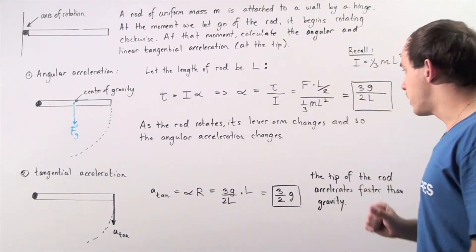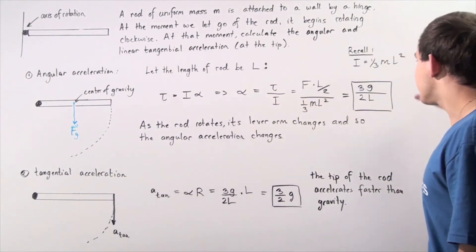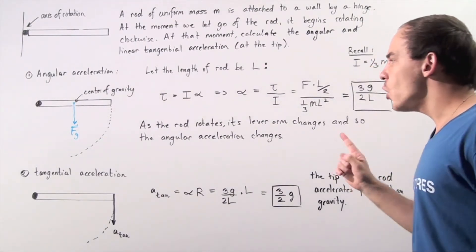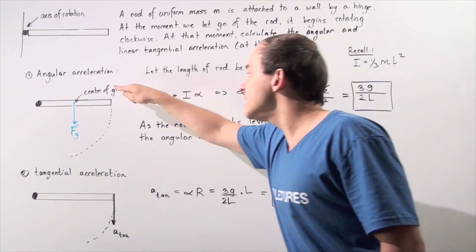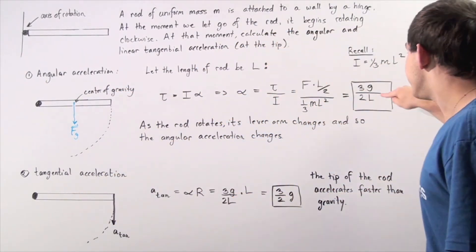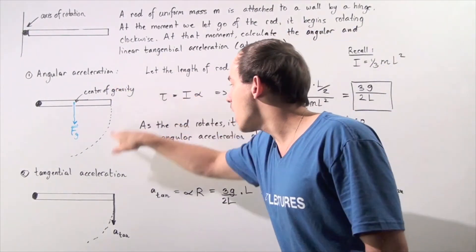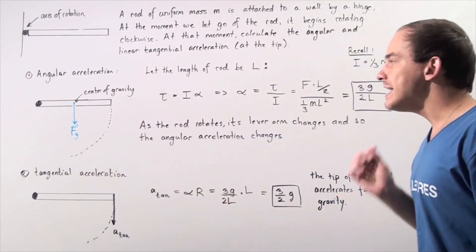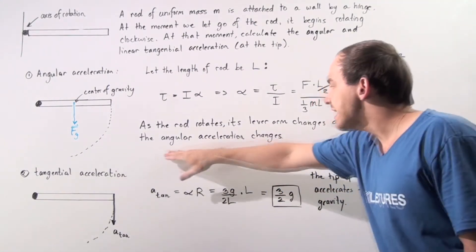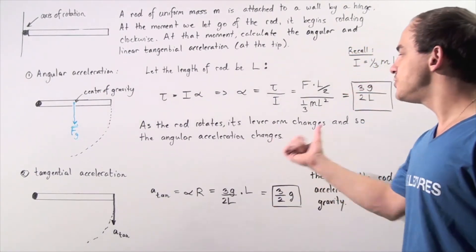We're left with our angular acceleration equal to 3 times G divided by 2L. Notice that as the rod begins to rotate, its lever arm — the quantity L — begins to change. That means as our object is rotating, even though the force of gravity is constant, the angular acceleration of the object is not constant. It changes.